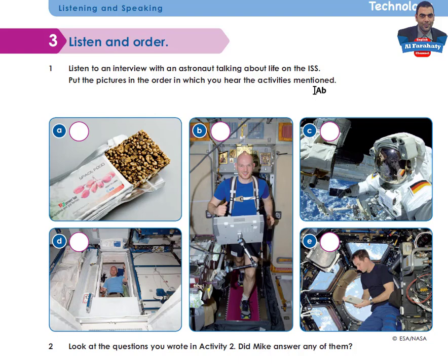Good morning, Mike. How are things up on the International Space Station? Great, thanks. I'm just looking at Earth from my window — it's beautiful. Now I've got some questions to ask you about life up there. Go ahead, I'm ready. Well, my first question is: where do you sleep? I sleep in a small cabin so that I don't float away. And what do you eat? We don't have a fridge to keep things fresh, so we eat a lot of dry food. Do you ever go outside the space station? Yes. Sometimes things get broken, so we have to repair them. That's very dangerous — we put on space suits and go outside and do a space walk.